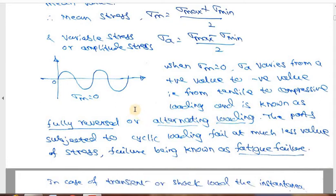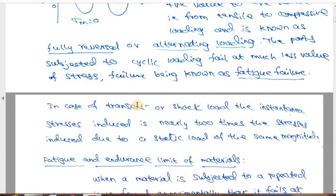Cyclic or fatigue loading occurs because the load varies in nature — either tensile to compressive, or varying in magnitude. For example, 200 N tensile becoming 100 N tensile: both are tensile but the magnitude changes. So either the direction or the magnitude changes. In such cases the member is subjected to what is called fully reversed or alternating loading, and that leads to fatigue failure — a failure that happens at a stress much less than the static failure stress.